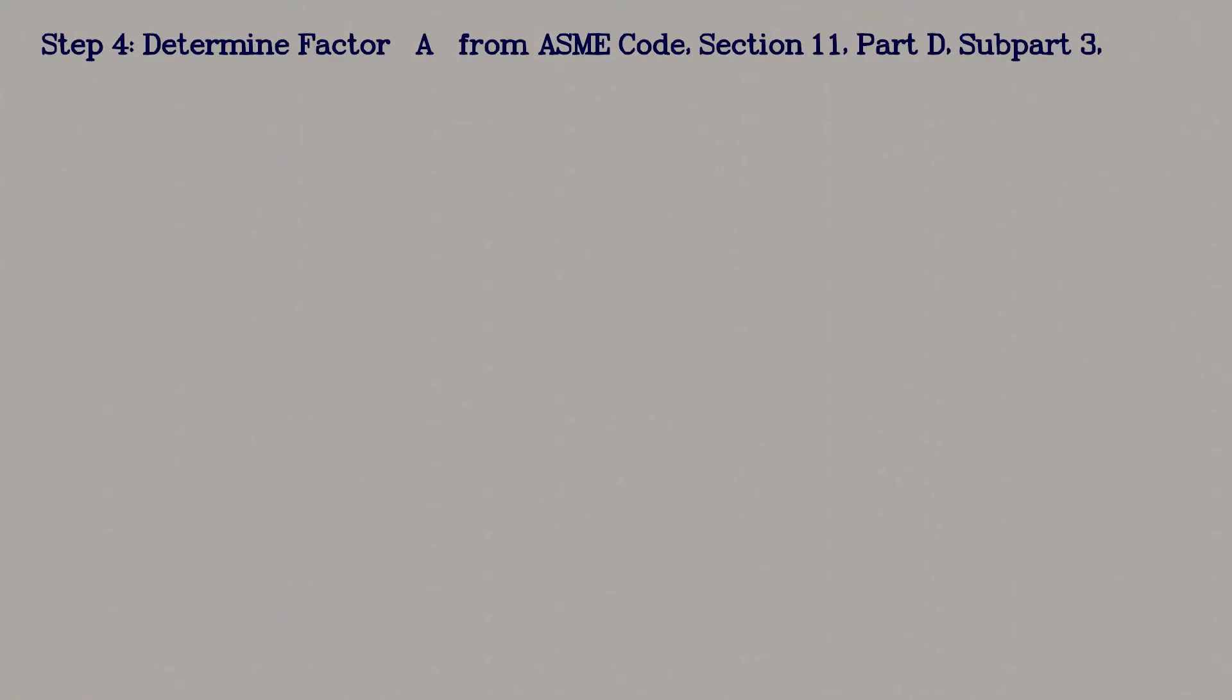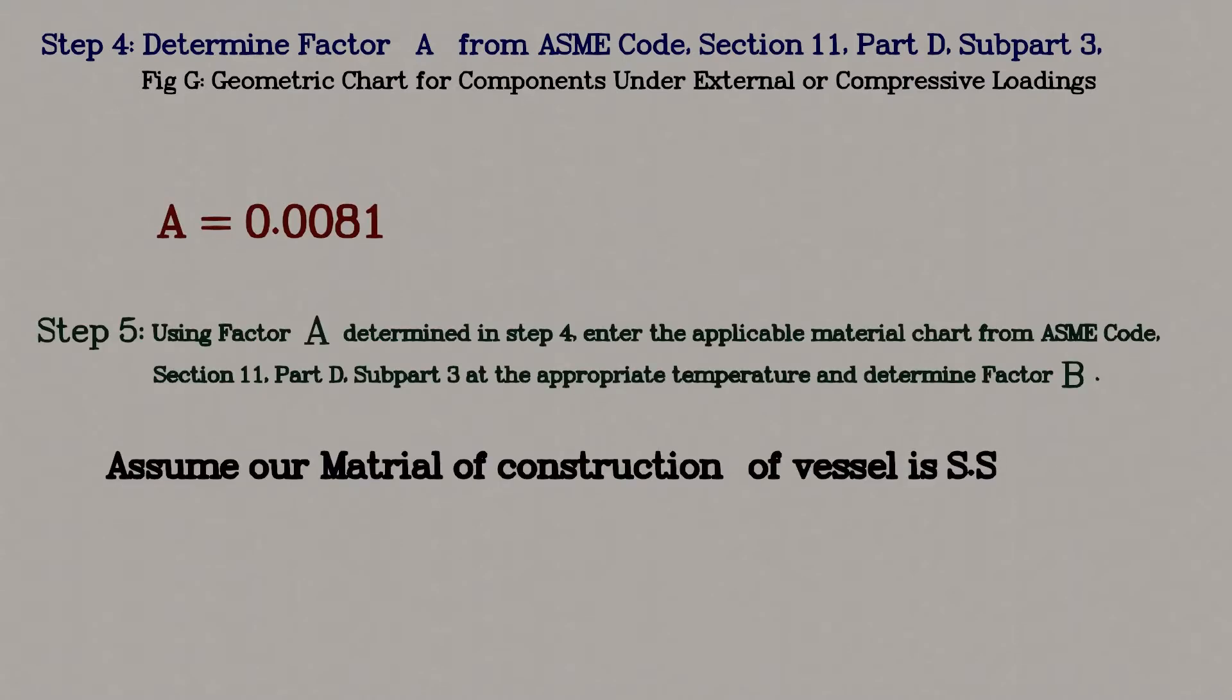To find out allowable pressure, we need factors A and B. Determination of these factors was not explained earlier. Indirect values were used. In today's video, I will try to show you how we can find factors A and B from the charts.